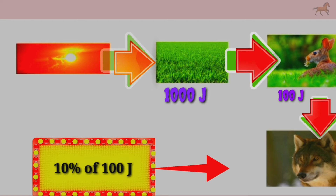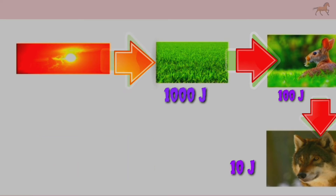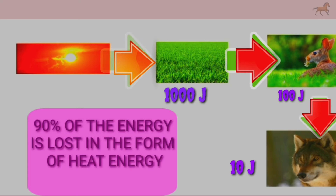For example, 10% of 1000 Joules is 100 Joules, and 10% of 100 Joules is 10 Joules. So we can see that almost 10% of the energy captured by the former trophic level is moving into the next trophic level.